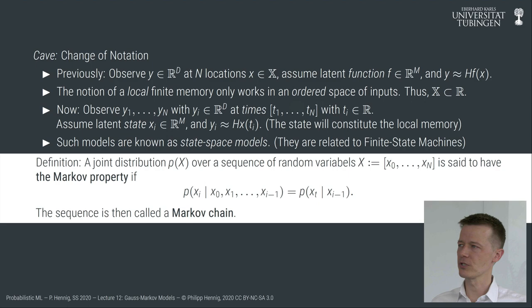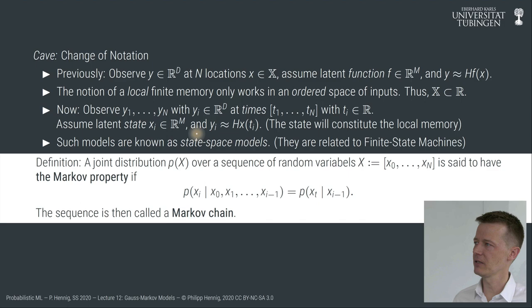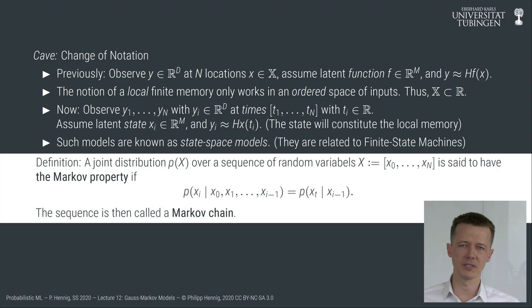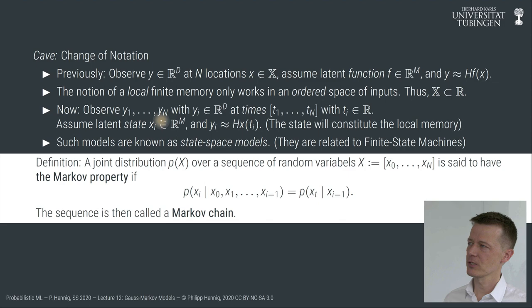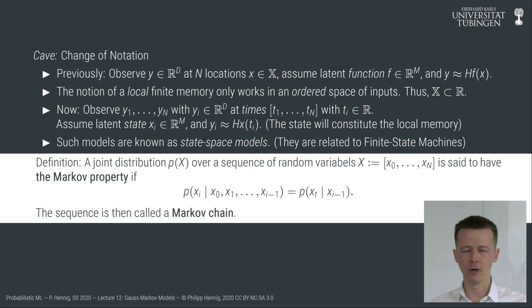Because we are no longer using the variable x as input, in this community it's typical to call the latent object not a function f but a state x which evolves over time. The word state evokes the idea of a memory that gets updated from one step to the next. Observations are typically local — a linear map of the local state, not all function values together. Such models are called state-space models, and from a probabilistic structure perspective, Markov chains.